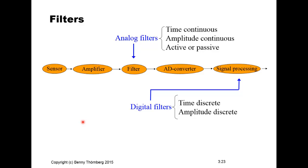What we see here is a general measurement system consisting of a sensor, amplifier, filter, A-to-D converter, and signal processing. This filter is an anti-aliasing filter that will limit the bandwidth of the signal before it is sampled by the A-to-D converter. This analog filter is time-continuous and amplitude-continuous, and it can be implemented both as active or passive.